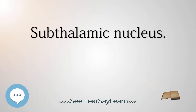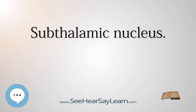The subthalamic nucleus is a small lens-shaped nucleus in the brain where it is, from a functional point of view, part of the basal ganglia system. In terms of anatomy, it is the major part of the subthalamus. As suggested by its name, the subthalamic nucleus is located ventral to the thalamus. It is also dorsal to the substantia nigra and medial to the internal capsule. It was first described by Jules Bernard Luys in 1865, and the term corpus luysi or Luys body is still sometimes used.